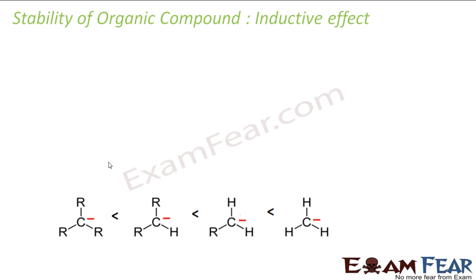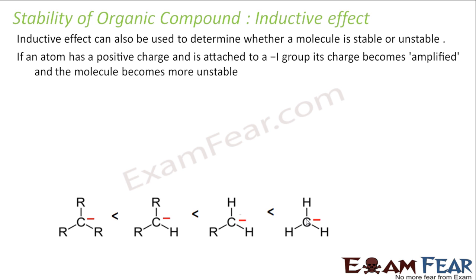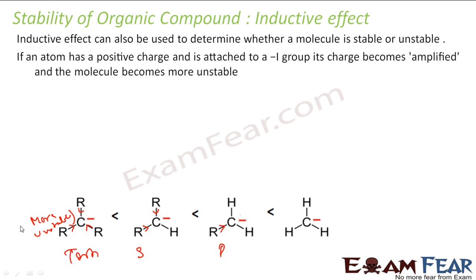The inductive effect also affects stability — it can in fact make things more unstable. For example, I have a primary carbon, a secondary carbon, and a tertiary carbon — that is, a central carbon with two carbons attached. Since the central carbon has a negative charge, the surrounding alkyl carbons will add to the inductive effect and give more electrons to it, making it all the more negative and therefore all the more unstable.